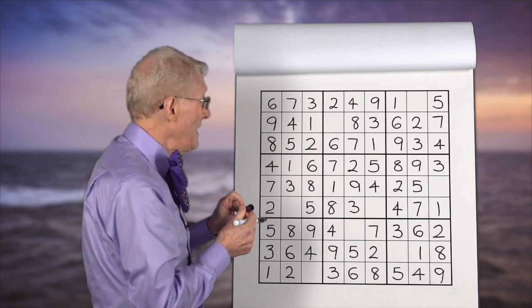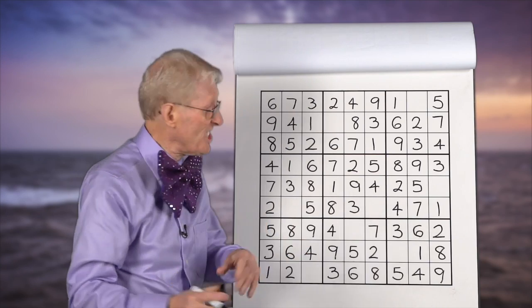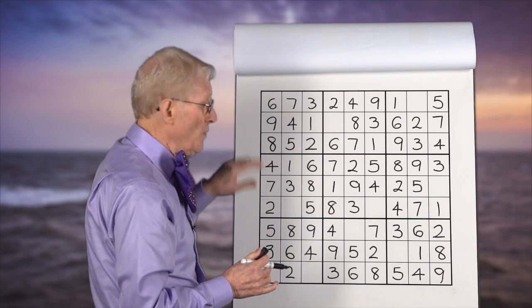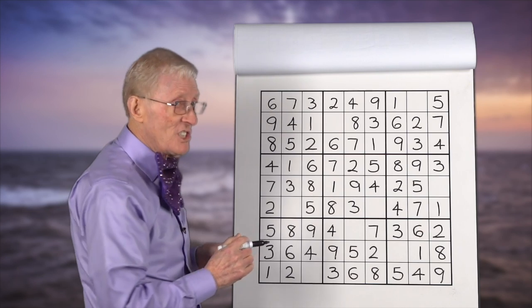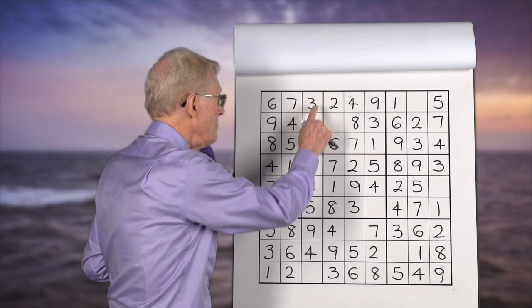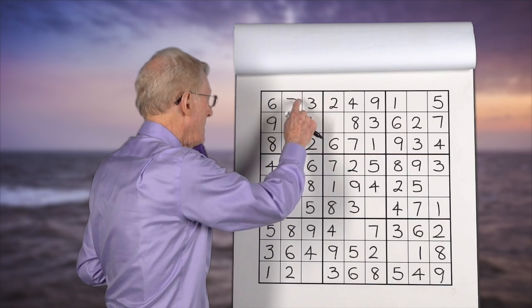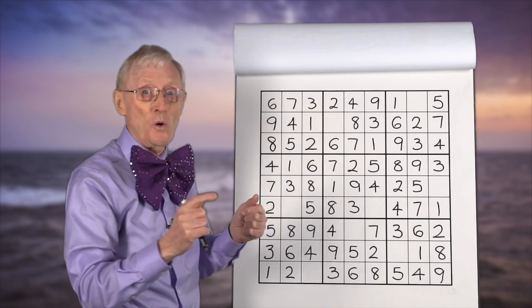Now if you notice beforehand, and I mentioned this in a previous session, that this block only had one left in it. So we can self-check ourselves by going 1, 2, 3, 4, 5, 6, 7, 8, 9. So we know we're right.